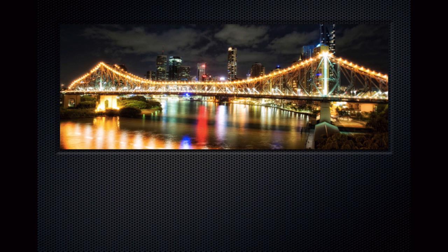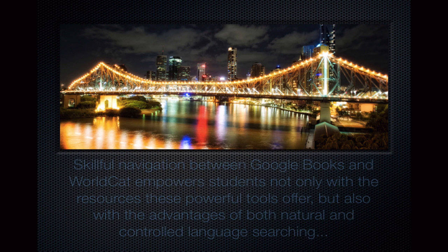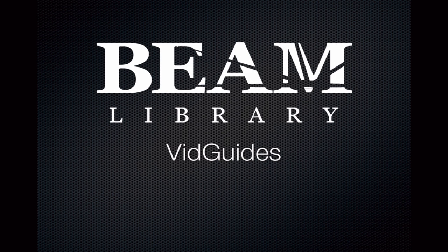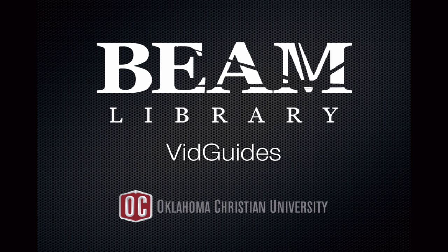So we have Google Books and WorldCat — two very useful resources for locating important information for your research. Skillful navigation between Google Books and WorldCat empowers students not only with the resources these powerful tools offer, but also with the advantages of both natural language and controlled language searching. If you have any questions, feel free to ask a librarian, and be sure to check out the other video research guides brought to you by the Beam Library at Oklahoma Christian University.